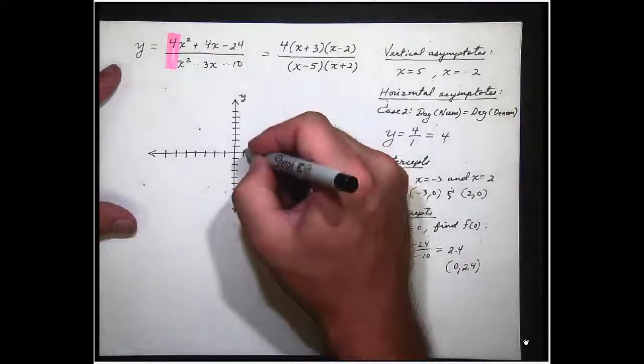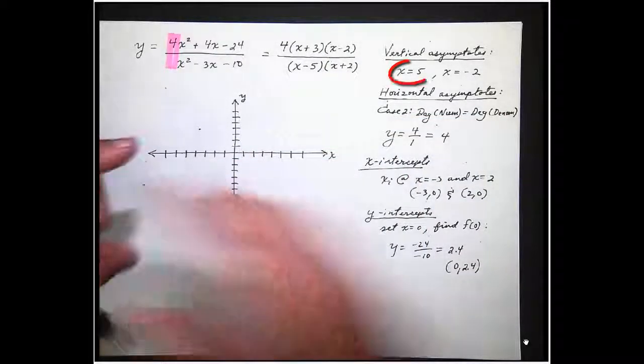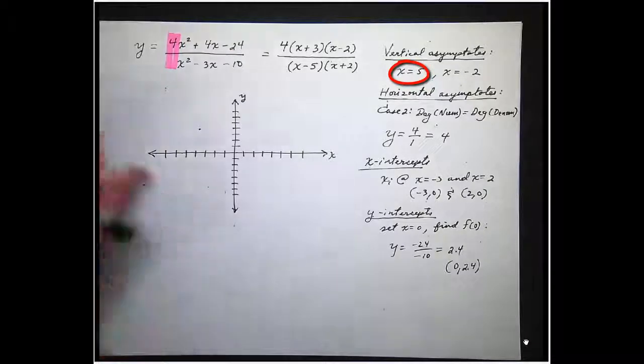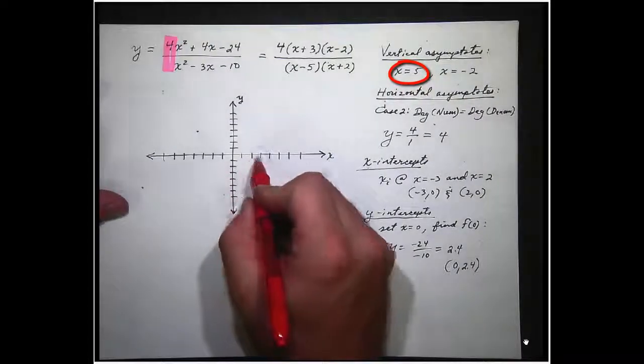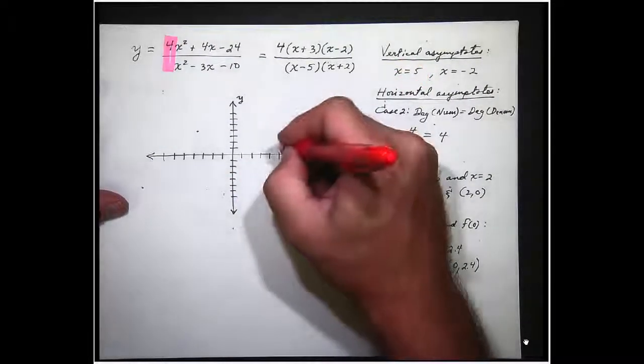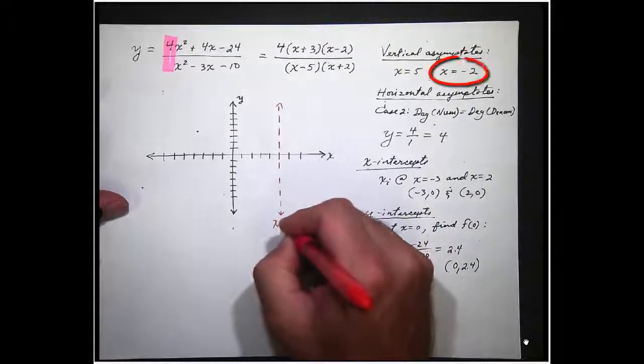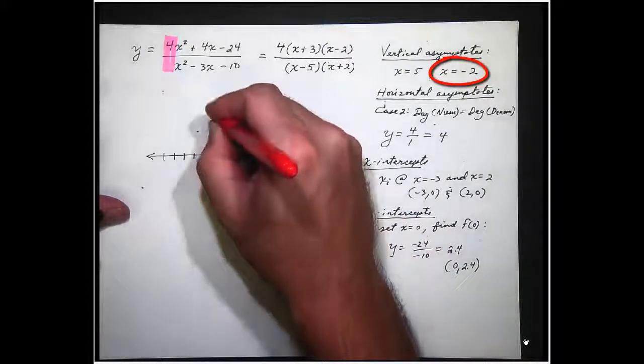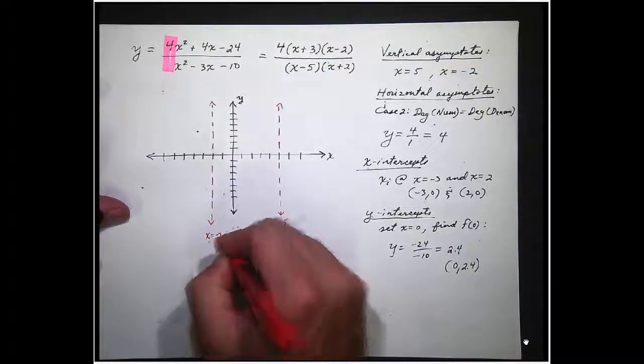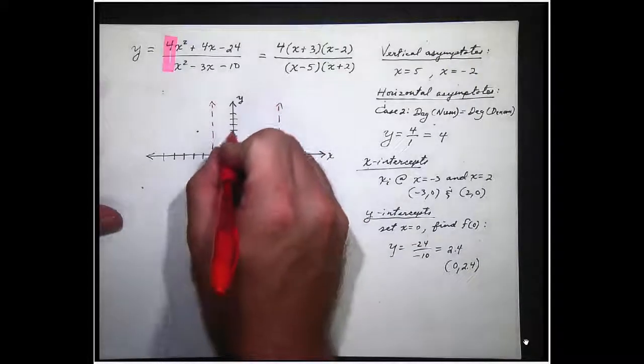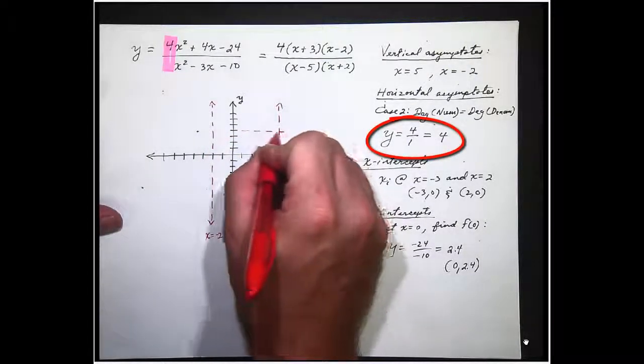At 5, I have a vertical asymptote. As for fun, let's do it in a different color. Let's do it in red. 1, 2, 3, 4, 5. x equals 5. At negative 2. At y equals 4. 1, 2, 3, 4. I have a horizontal asymptote.